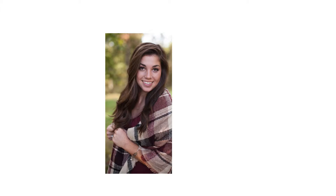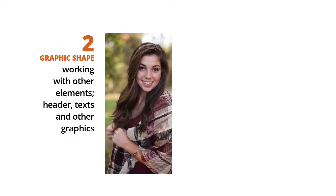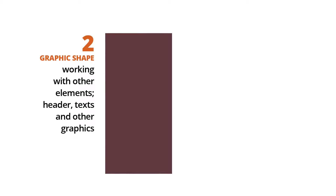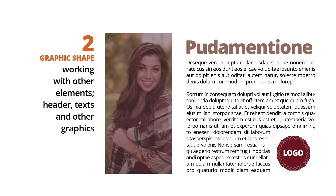In the previous video about having your images taken in the best way, we discovered that any image on any given surface or page has two main functions. The first is to convey information about something — I call this the content of the image. The second is to constitute a shape or part of the total visual composition. In this function, the image has to work together with other graphical elements on the page, like headers, texts, and other graphics.